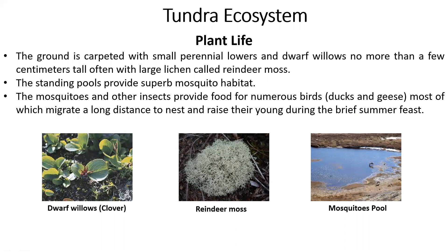In the tundra, plants grow small, low, and as dwarfs close to the ground. They don't grow tall. These ground-hugging plants include reindeer moss, which has a distinctive shape. The land surface features reindeer moss and dwarf plant species.